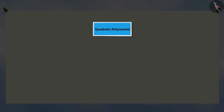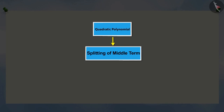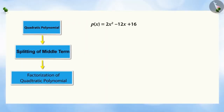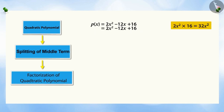Do you know that by splitting the middle term of a quadratic polynomial, it can be factorized? For example, the polynomial is 2X squared minus 12X plus 16. The term minus 12X is written as the sum of two such terms whose product is 32X squared. On further solving, we get the factors of this polynomial.